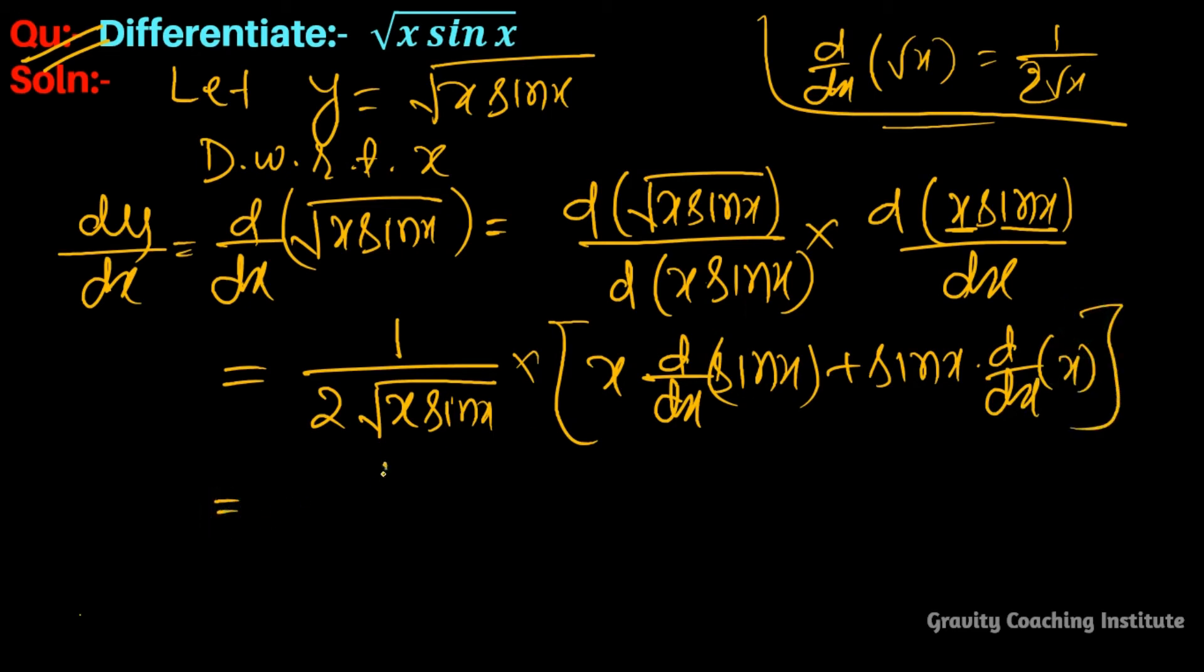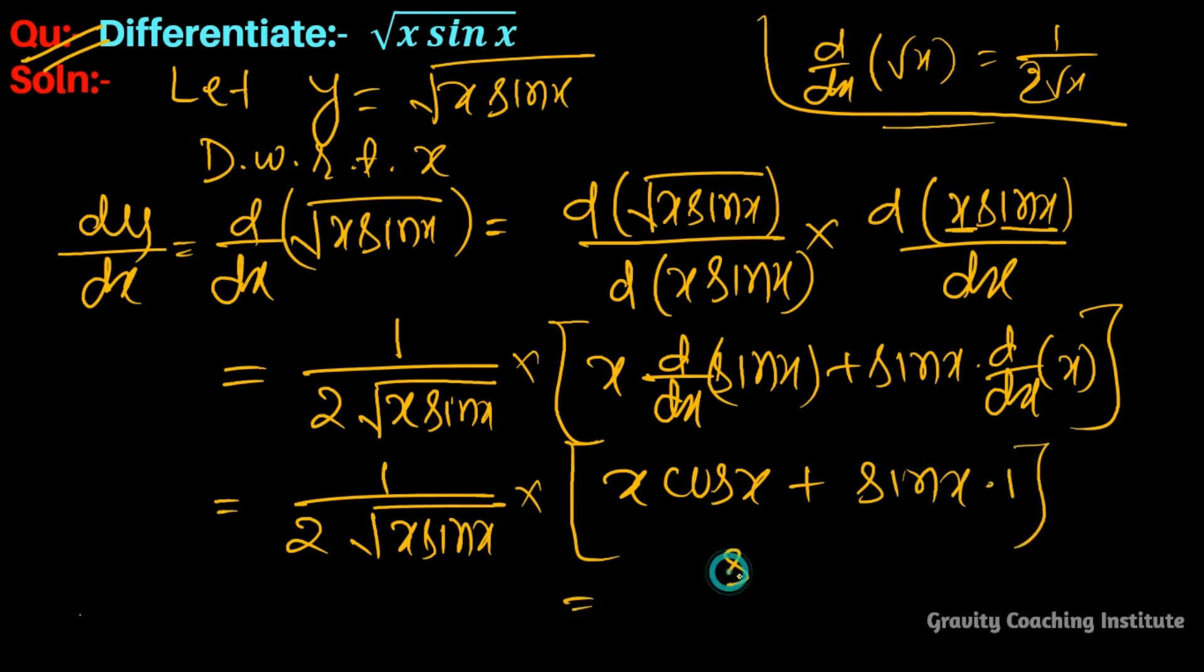This gives x cos x plus sin x times 1. So we get (sin x + x cos x)/(2√(x sin x)), which is our required answer.